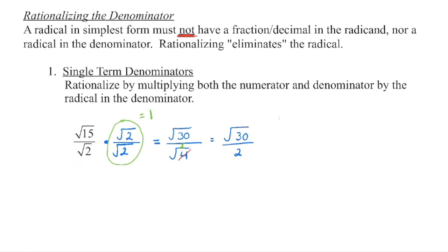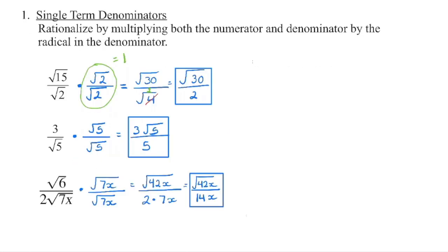In the second example, we need to eliminate the radical in the denominator by multiplying by that radical. The square root of 5 times the square root of 5 gives the square root of 25, leaving just 5 in the denominator. In the numerator, 3 times 1 is 3, times the square root of 5. There's no more radical in the denominator, and we cannot reduce 3 fifths, so this is our final answer.